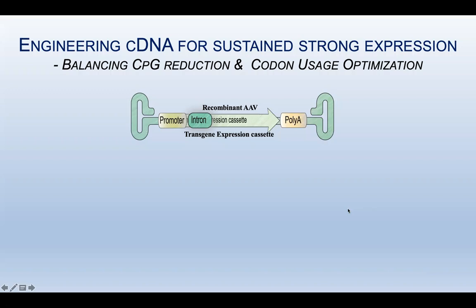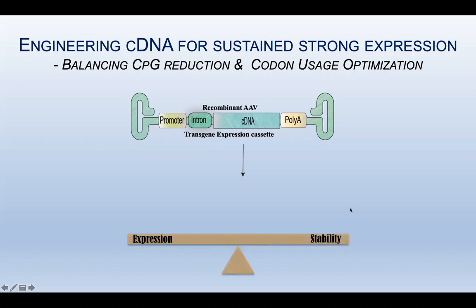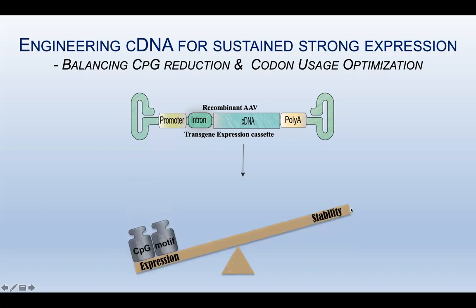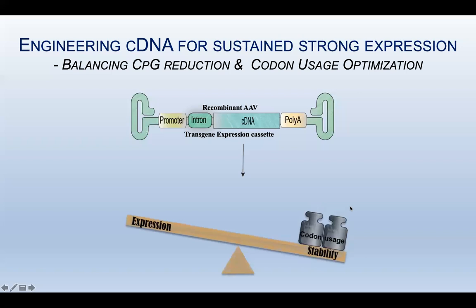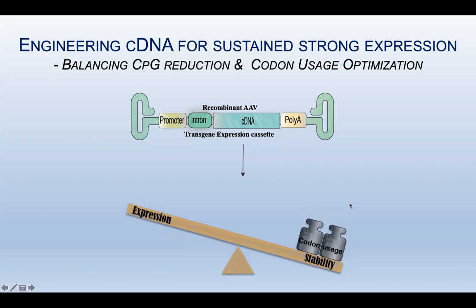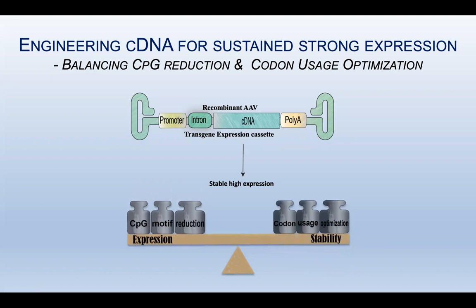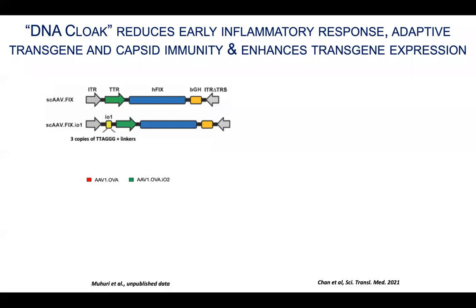In summary, engineering cDNA for sustained strong transgene expression requires consideration of two important factors. If we reduce CpG motifs, we could potentially increase the stability of transgene expression. But if we optimize codon usage, we should be able to enhance high expression levels. Our job is to balance these two factors to accomplish stable, high expression.